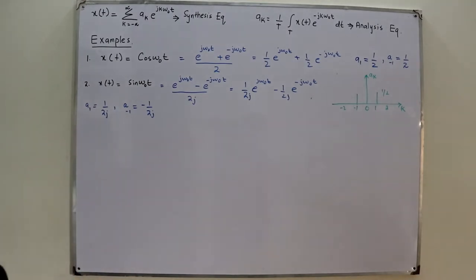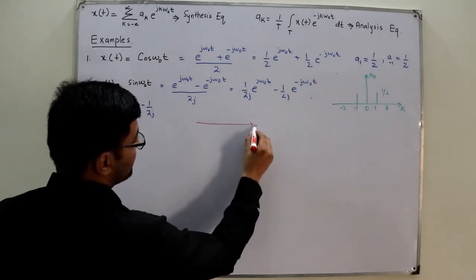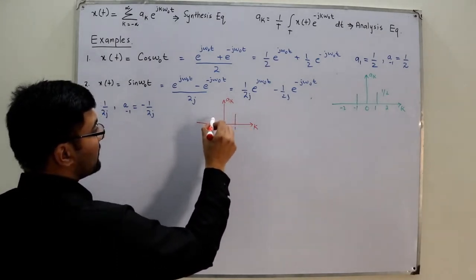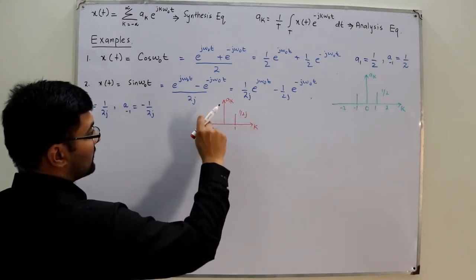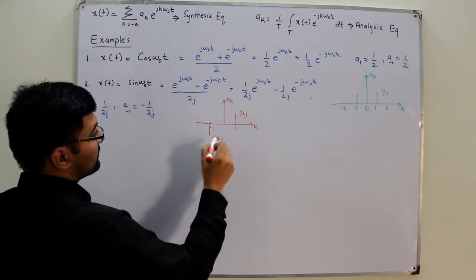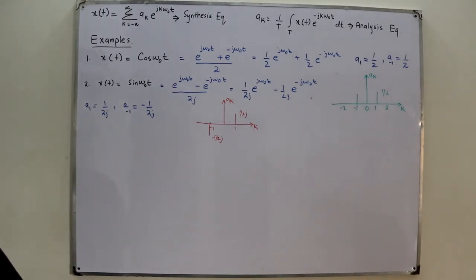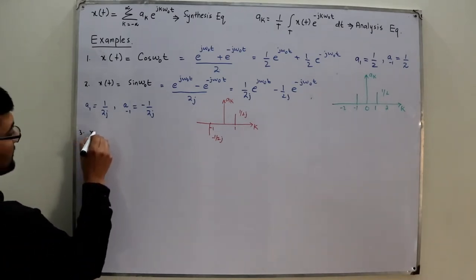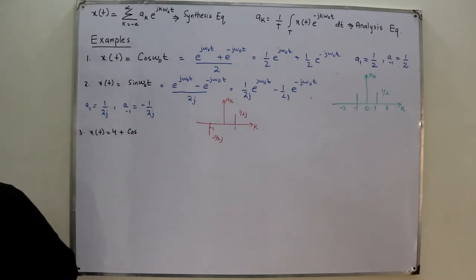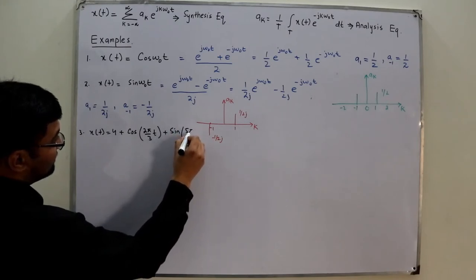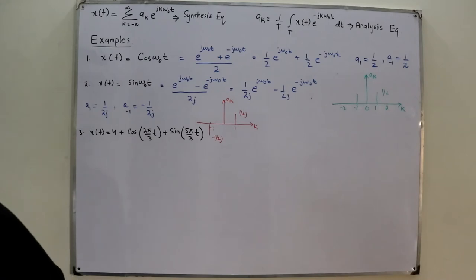Similarly, comparing the other term, this is for k = −1, so a₋₁ = −1/(2j). Again only two Fourier coefficients. On the aₖ plot, at k = 1 we have 1/(2j) and at k = −1 we have −1/(2j). Now for the next example, let's say x(t) = 4 + cos(2π/3 · t) + sin(5π/3 · t).